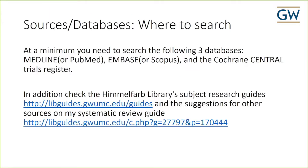At a minimum, when you carry out your search you will need to search at least three databases: Medline or PubMed (since PubMed contains the entirety of Medline), Embase or Scopus (which contains the content of Embase), and the Cochrane Central Trials Register. This is just the minimum. On top of this, you will want to search additional databases that index your subject area — you can look at our library subject research guides or the suggestions for other sources on my systematic review guide, the link for which is in the handout sent to you earlier.